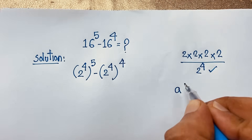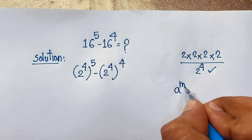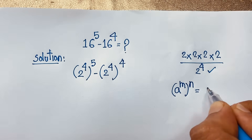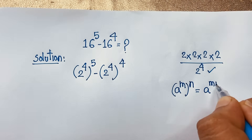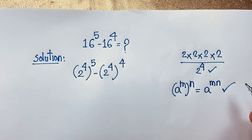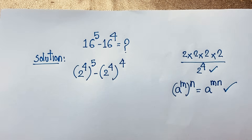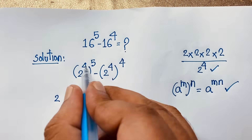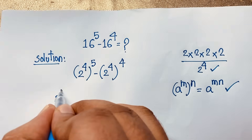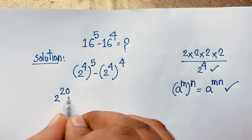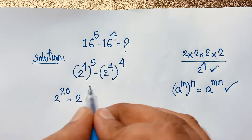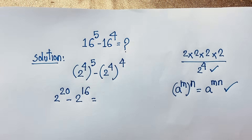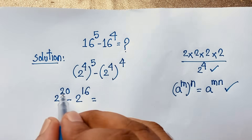According to the exponential formula, (a to the power m) to the power n equals a to the power m times n. According to this formula, I can say the first expression becomes 2 to the power 4 times 5, which equals 2 to the power 20, minus 2 to the power 4 times 4, which equals 2 to the power 16.